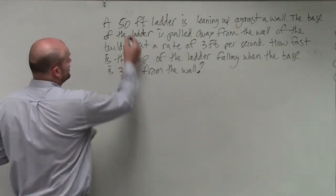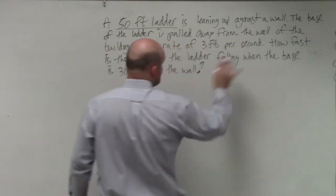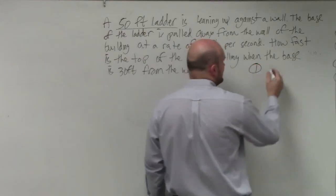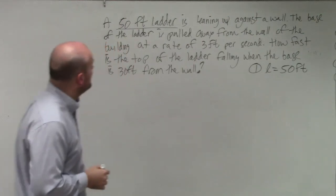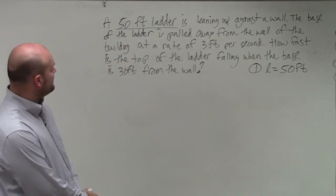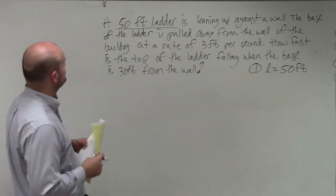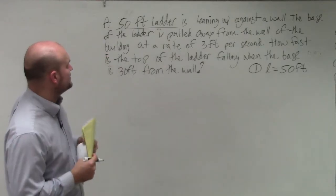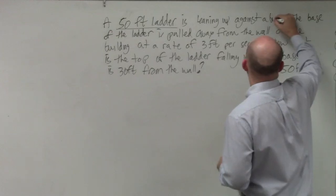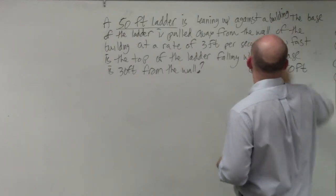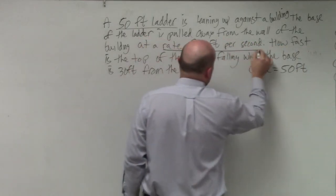A couple of things: I know that the ladder has a length of 50 feet, so step one — L equals 50 feet. It's pulled away from the wall of a building at a rate of 3 feet per second. So this is a rate of 3 feet per second.